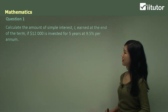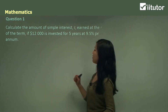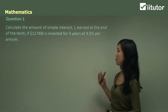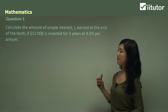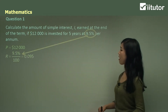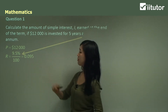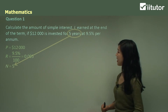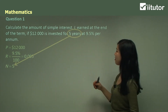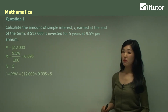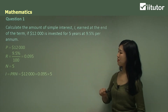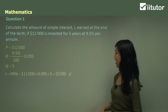Question one: calculate the amount of simple interest earned at the end of the term if $12,000 is invested for five years at 9.5% per annum. P is the principal value $12,000. R the rate is 9.5%, or as a decimal 0.095. N, the number of terms, is five years. So I equals $12,000 times 0.095 times 5, which gives $5,700.